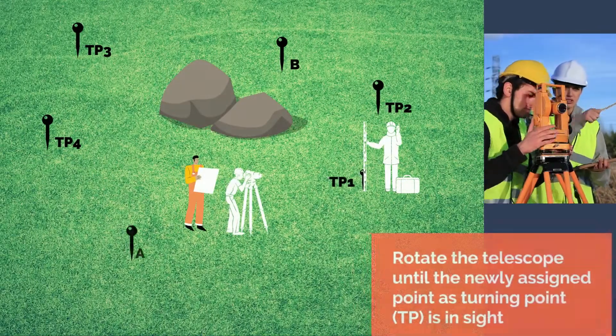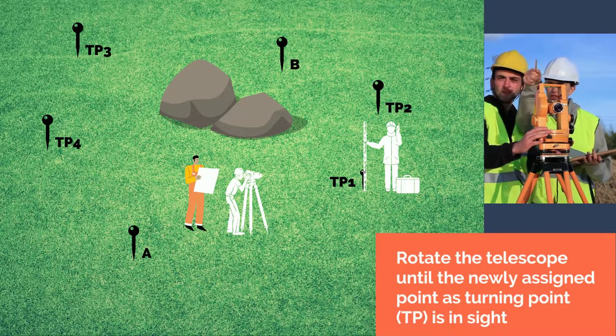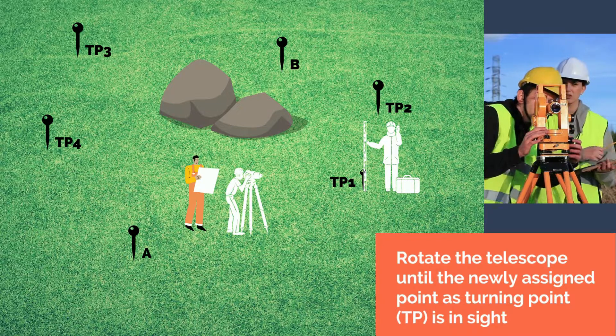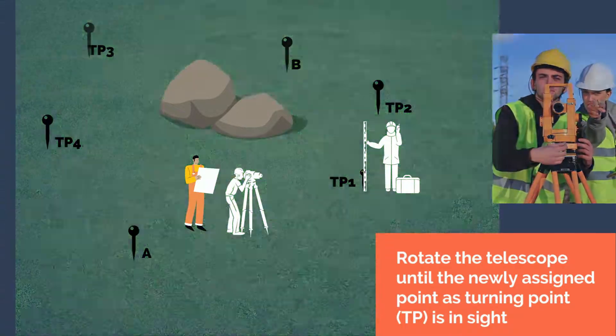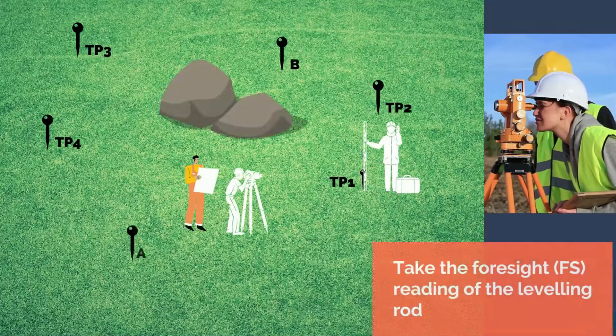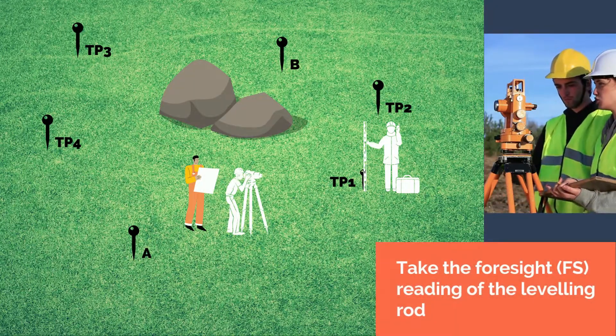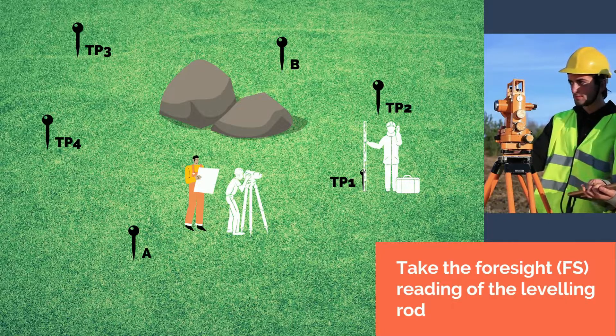Next, rotate the telescope until the newly assigned point as turning point is in sight. The rodman must now transfer the leveling rod at the same place as well. Take the foresight reading of the leveling rod by doing the same thing we did earlier.